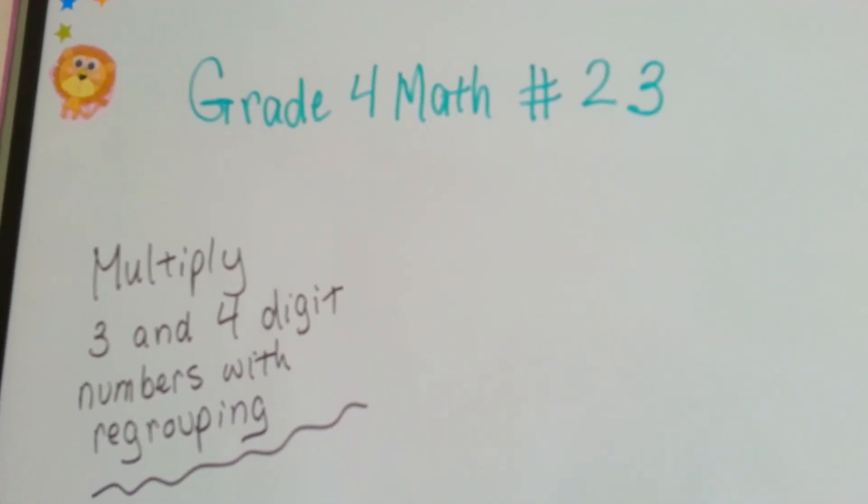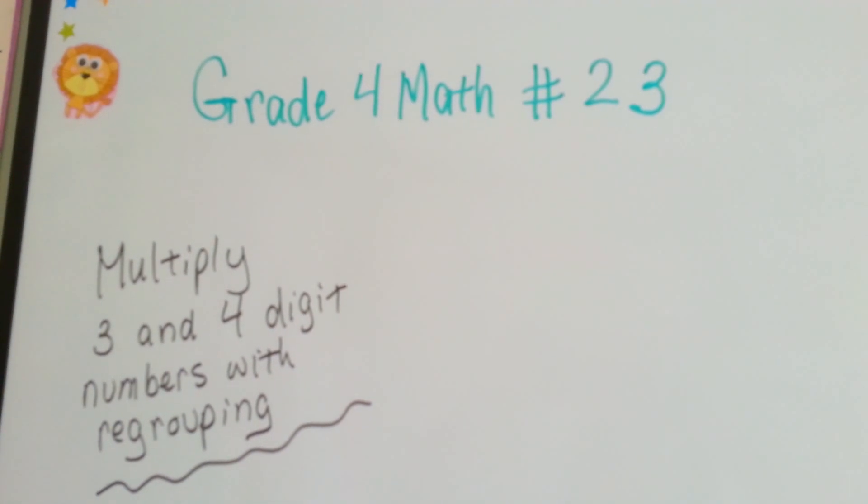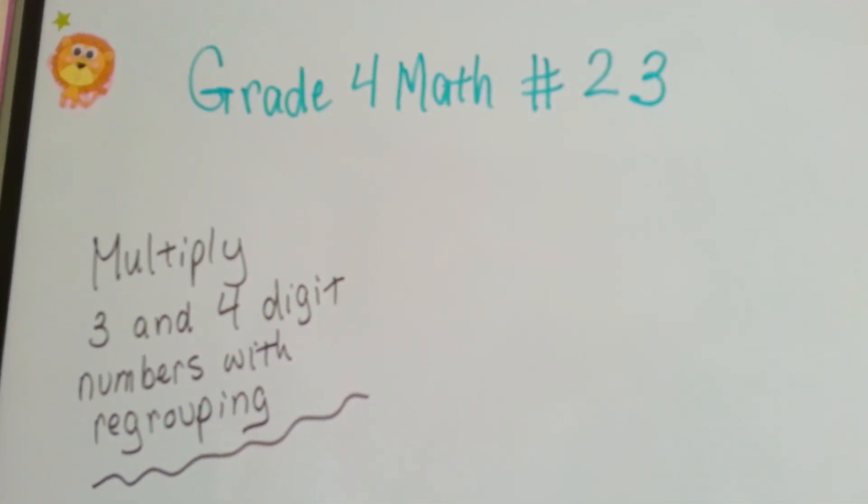Grade 4 math number 23. Multiply 3 and 4 digit numbers with regrouping.